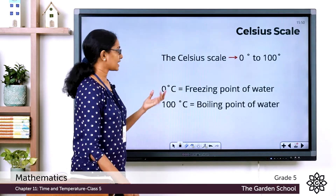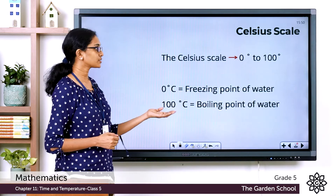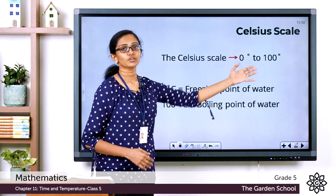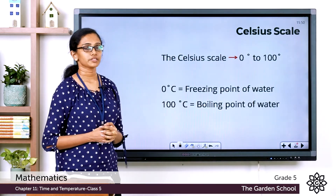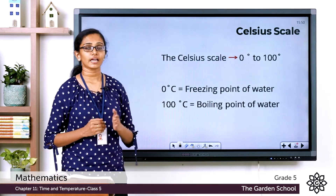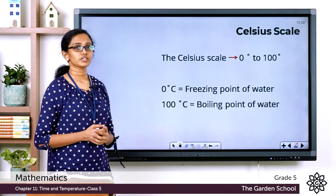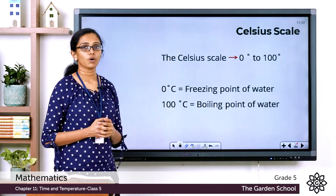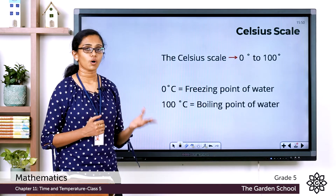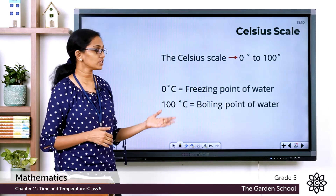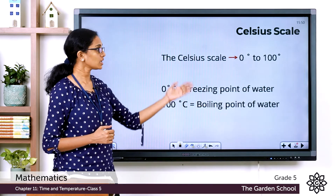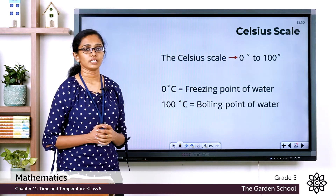In the Celsius scale, the temperature is marked from 0 degree to 100 degree on a thermometer. Water freezes at 0 degree Celsius, and hence 0 degree Celsius is the freezing point of water according to the Celsius scale. Water boils at 100 degree Celsius, and hence 100 degree Celsius is the boiling point of water according to the Celsius scale.